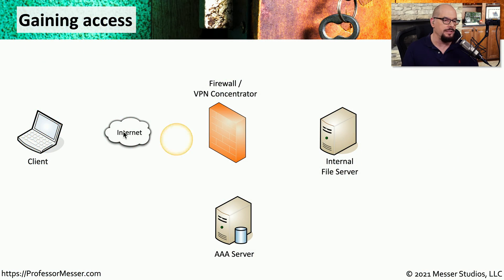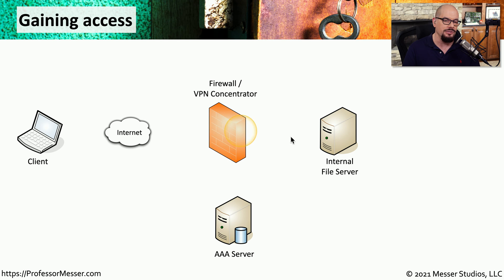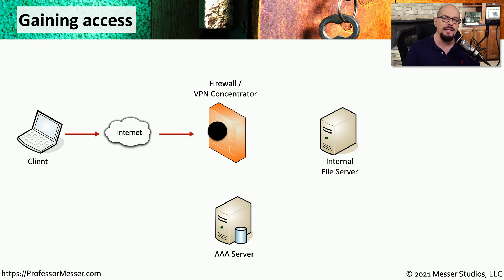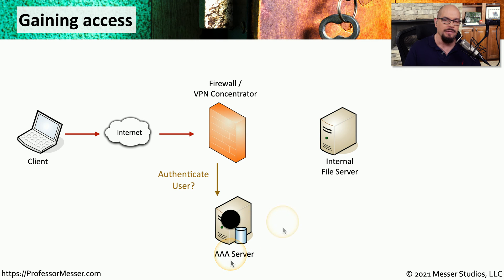This is a common problem that needs to be solved. You have a client who's outside of the building, accessing a VPN concentrator that is part of your organization so that they can gain access to an internal file server. But before they're allowed access, they first need to authenticate. They're going to send a request through the internet to the VPN concentrator to log in. The VPN concentrator doesn't have any information about usernames and passwords, so it passes that request down to a AAA server — a server designed to provide authentication, authorization, and accounting — which will check the username and password to see if it's valid.